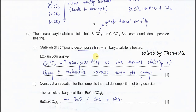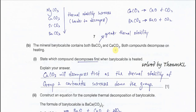Part B: the mineral baritocalcite contains barium carbonate and calcium carbonate. Both compounds decompose on heating. Part B1: which compound decomposes first? You need to know the thermal stability trend — down the group, Group 2 carbonates are harder to decompose, so they have higher thermal stability down the group. Thermal stability increases means the compound is thermally more stable. You need to memorize this trend in AS.